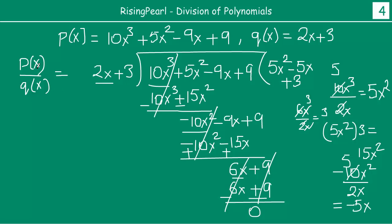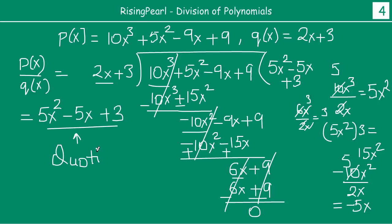So when you do P(x) by Q(x), the quotient is nothing but the sum of all these terms: 5x squared minus 5x plus 3. That becomes your quotient. And what we see is that the remainder becomes 0. So this is our second example of how we divide one polynomial by another polynomial.